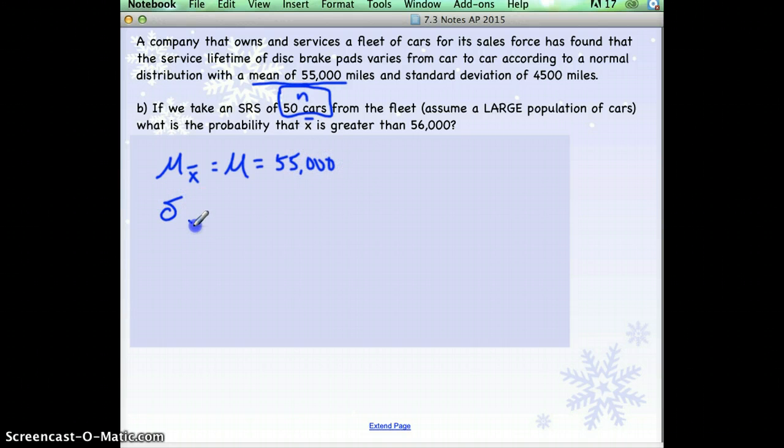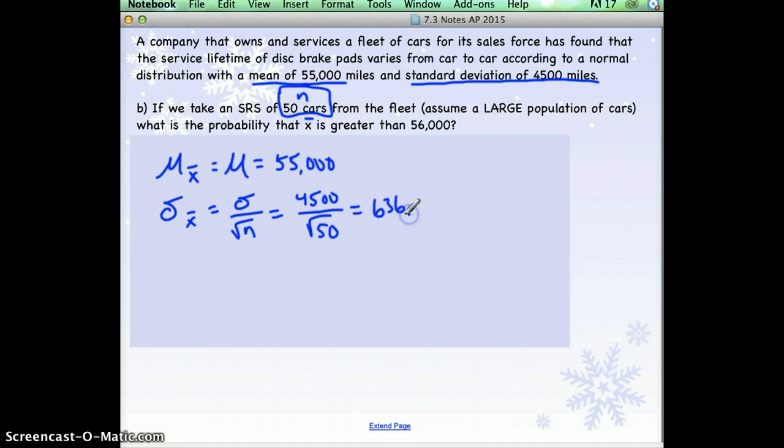The standard deviation of all of our sample means equals the population standard deviation divided by the square root of n. The population standard deviation was given to us, 4,500. Now our n value is 50, so now we have to divide by the square root of 50. And this standard deviation now is 636.396. That's our new standard deviation.